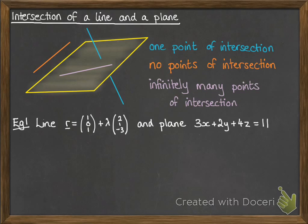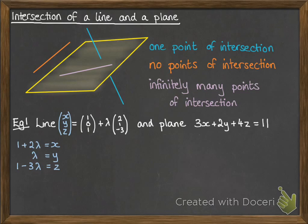Here we've got an example. We're going to work out the intersection of this line with this plane. Let's replace the equation for the line with the x, y, z vector, and then we can set out these Cartesian equations so that we've got what x, y, and z would be in terms of lambda. Then if that line lies on the plane, we can substitute those x, y, and z values into the equation of the plane and work out what value lambda has to be.